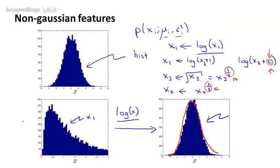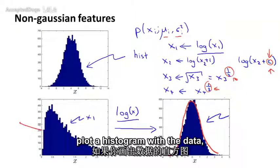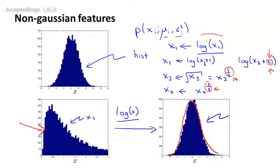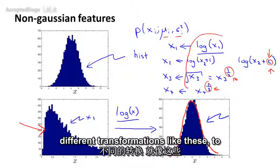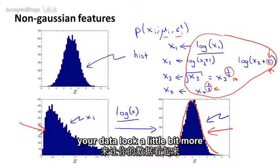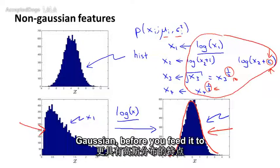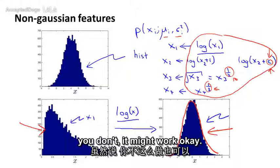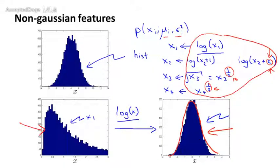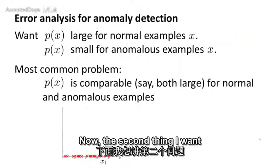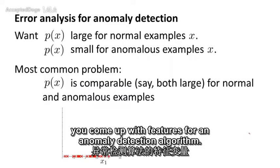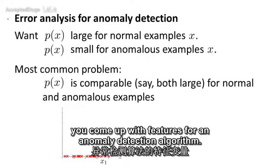To summarize: if you plot a histogram of the data and find it looks pretty non-Gaussian, try playing around with different transformations to make your data look a bit more Gaussian before feeding it to your learning algorithm. Although even if you don't, it might work okay — but I usually do take this step. Now, the second thing I want to talk about is how to come up with features for an anomaly detection algorithm.